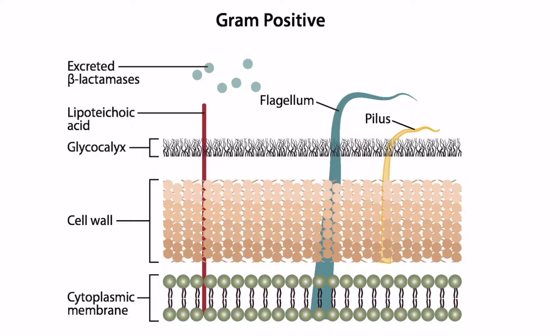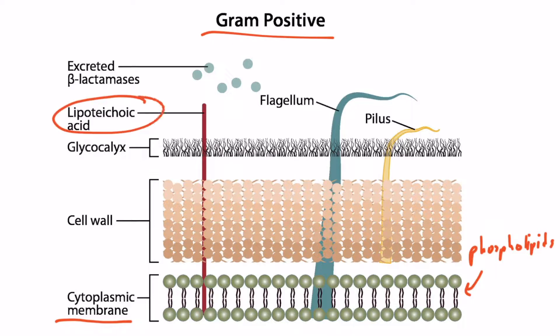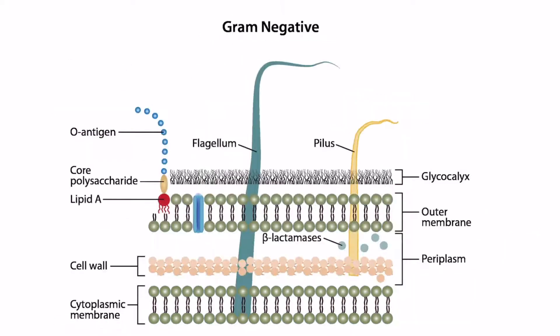Here's a depiction of gram-positive bacteria. Notice we have the cytoplasmic membrane right here, and you can see that it's made of phospholipids. You can also see the lipoteichoic acid right here, which originates in the cytoplasmic membrane. This image depicts gram-negative bacteria, and it has that cytoplasmic membrane made of phospholipids as well.